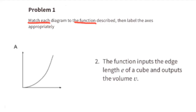Diagram A matches function number 2. The function inputs the edge length, E, of a cube and outputs the volume, V. Edge length, E, would be the horizontal axis, or the x-axis, and volume, V, would be the vertical axis, or the y-axis. This graph shows that as the edge length of a cube, E, increases, the volume of the cube, V, also increases.